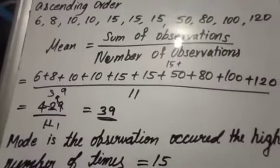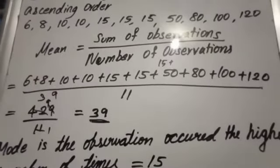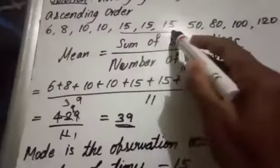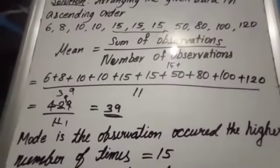Now let us calculate the mode. Mode is the observation that occurred the highest number of times. Here, highest number of times occurred is 15. So the answer is 15.